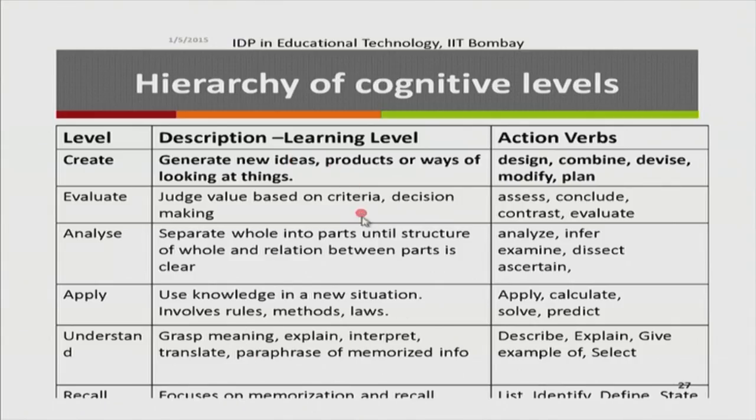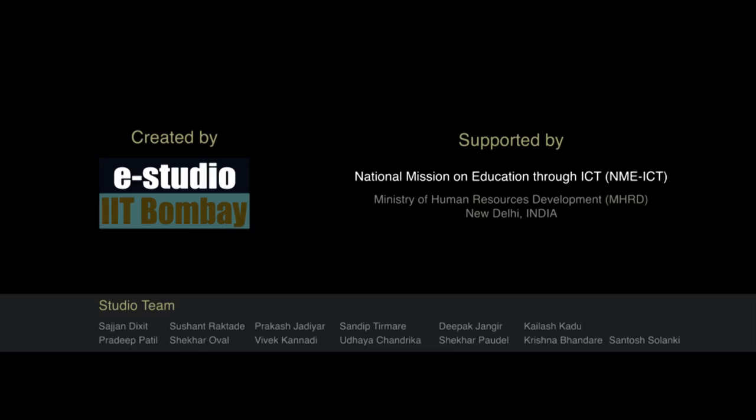To summarize: Revised Bloom's Taxonomy provides guidelines — definitions of levels and action verbs — so we can write learning objectives at different cognitive levels. Recall that learning objectives must be aligned with assessment questions on the exam, and also with the teaching-learning strategies used in class. All three must align to the same level. This concludes the session; we will now take a tea break before proceeding to the lab. Thank you.